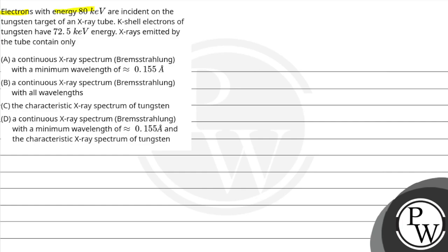Electrons with energy 80 kilo electron volt are incident on the tungsten target of an x-ray tube. K-shell electrons of the tungsten have 72.5 kilo electron volt energy. X-ray emitted by the tube contain only — option A: a continuous x-ray spectrum with minimum wavelength of 0.155 Angstrom.